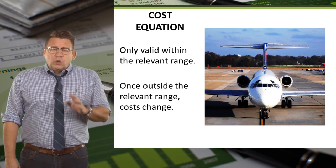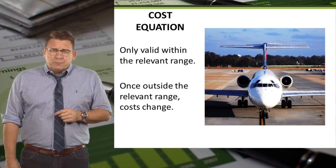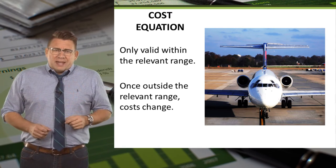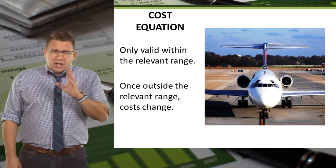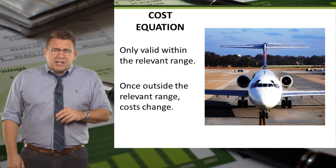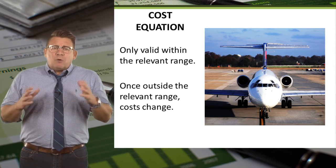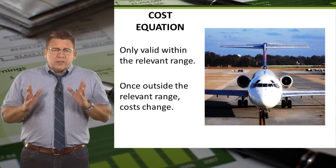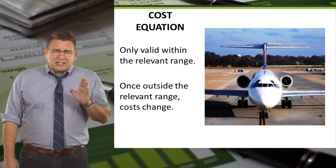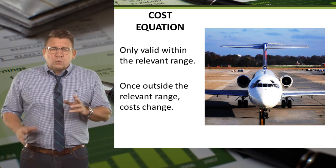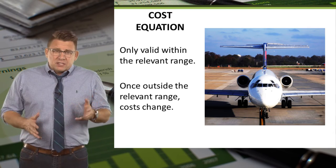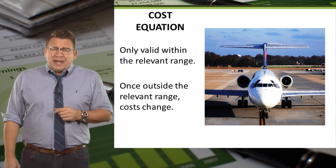The cost equation is only valid within a relevant range. Outside the relevant range of volume, the cost equation changes. For example, if I owned one airplane, I could predict costs at various levels of volume for flights from Salt Lake to Las Vegas — determining how many passengers I could fly and how many flights I could make in a day. All of those things are within the relevant range. However, once demand got so large that I needed a second airplane, the relevant range changes and the original cost equation is no longer valid. In this case, my fixed costs would go way up when I had to buy a second aircraft.